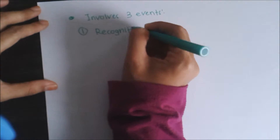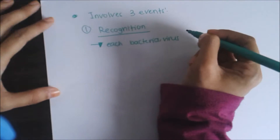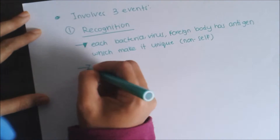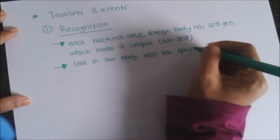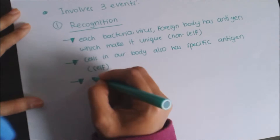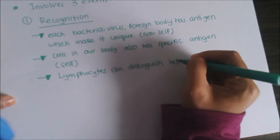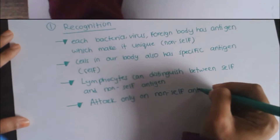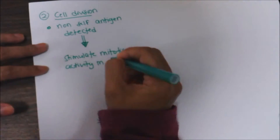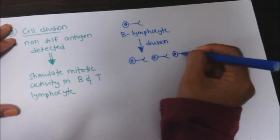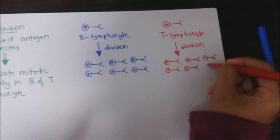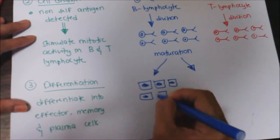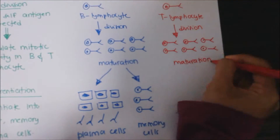Adaptive immunity involves three events. First, recognition: each bacteria, virus, or foreign body has an antigen which makes it unique. We call it a non-self antigen, which our body does not recognize. Lymphocytes can distinguish between self and non-self antigens and will attack only non-self antigens. Second, cell division: when a non-self antigen is detected, it stimulates mitotic activity in B and T lymphocytes. Third, differentiation: the daughter cells of B and T lymphocytes differentiate into plasma cells, memory cells, and effector cells. An example of an effector cell is the T helper cell.